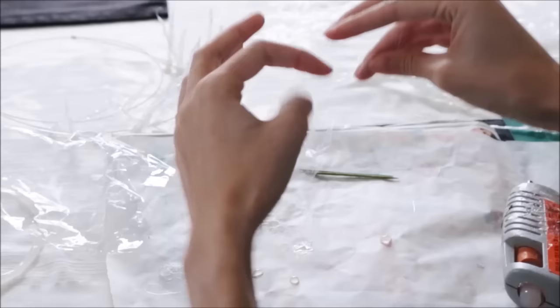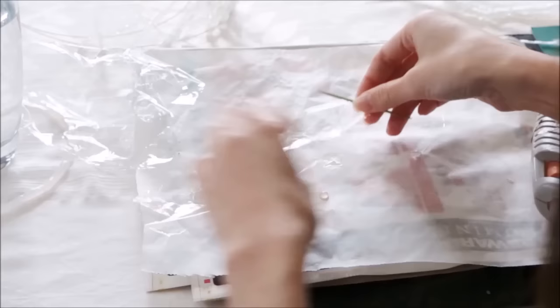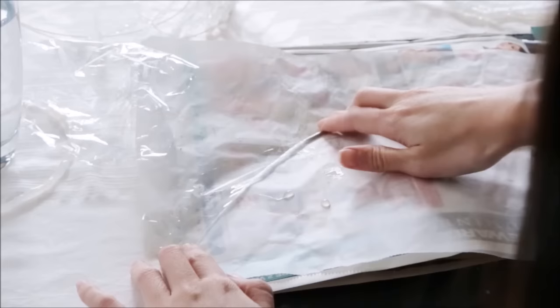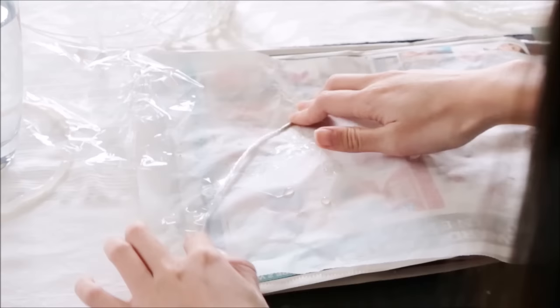Now grab your toothpick and lay your strip down on your work surface. Place the toothpick on the longer edge. You want about half of it sticking out so it's easier to remove it later. Then put your finger on the other corner and start rolling the toothpick. This will create the core of your icicle. Keep rolling until the plastic is wrapped all the way around itself. The tighter the better.